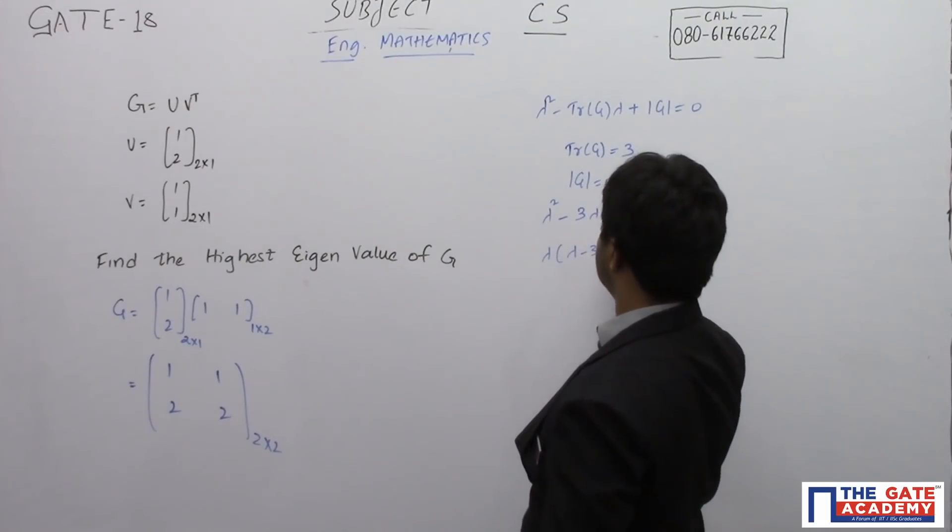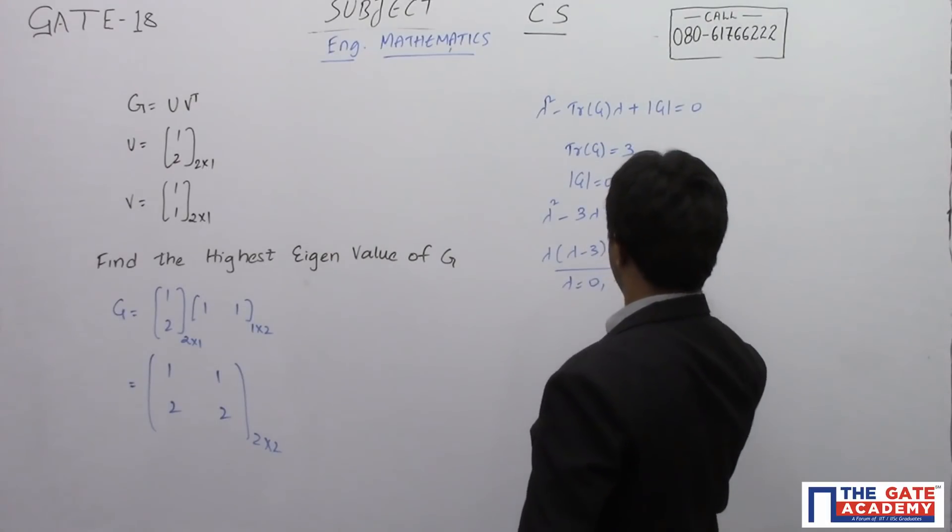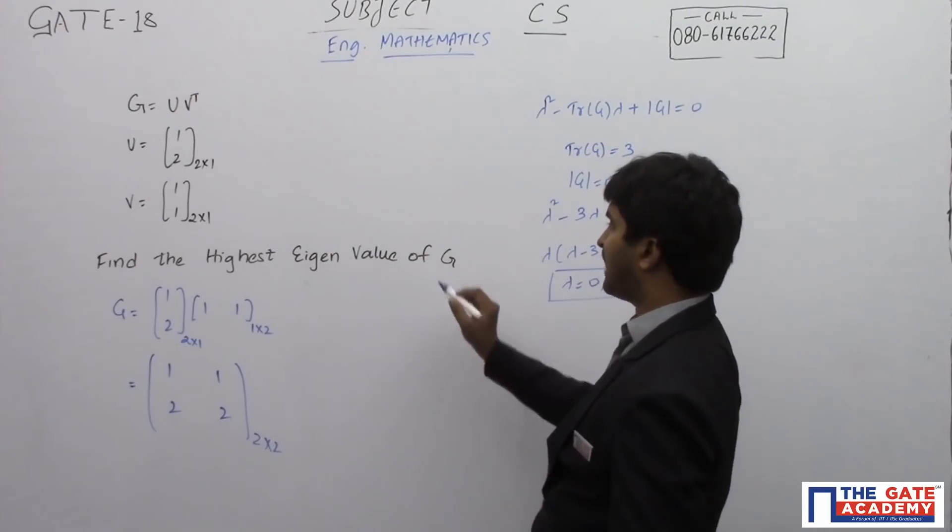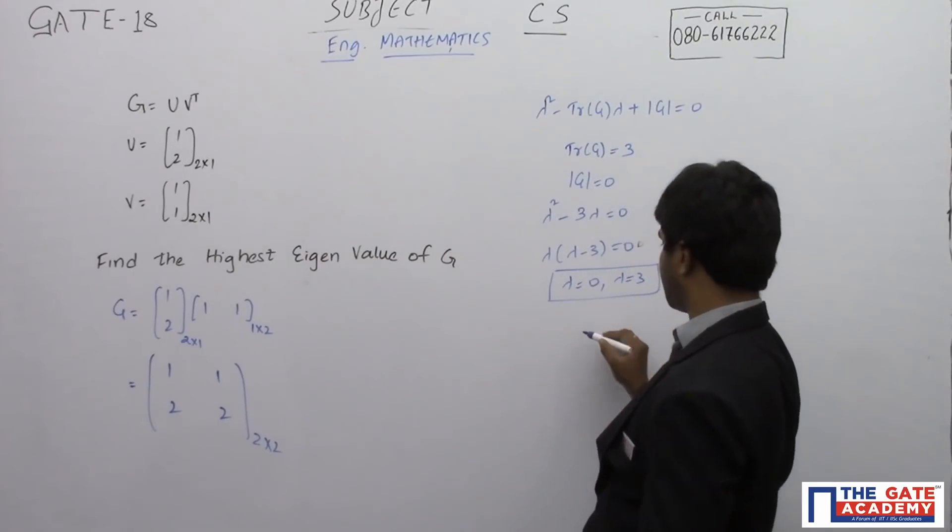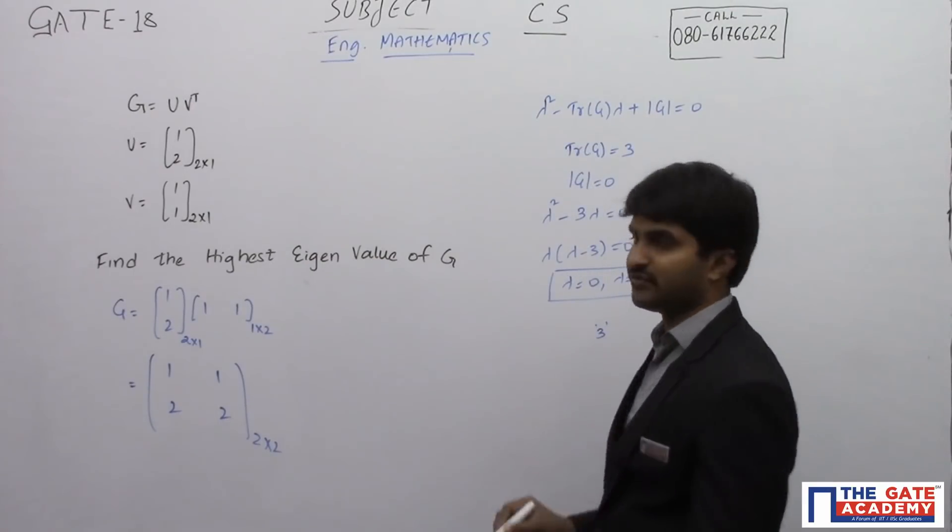If you substitute: lambda squared minus 3 lambda is equal to 0, lambda into (lambda minus 3) is equal to 0. So lambda is equal to 0 or lambda is equal to 3. So here the highest eigenvalue of G is nothing but 3. So 3 is the answer for this particular question.